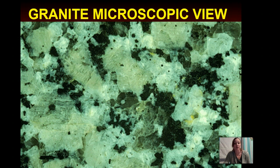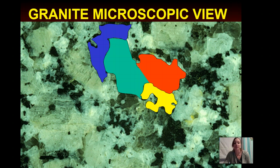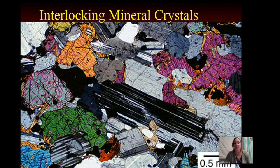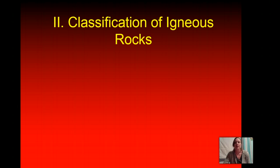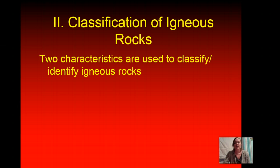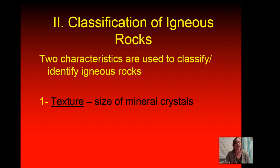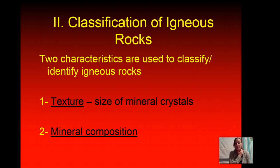Here's a picture of it up close, a microscopic view, and we have the different shapes. These are the different interlocking crystals that create this beautiful igneous rock. So how do we classify igneous rocks? There are two characteristics that we use: texture, which is the size of the mineral crystals, and the mineral composition. We're going to look at that a little bit more closely in the next few slides.